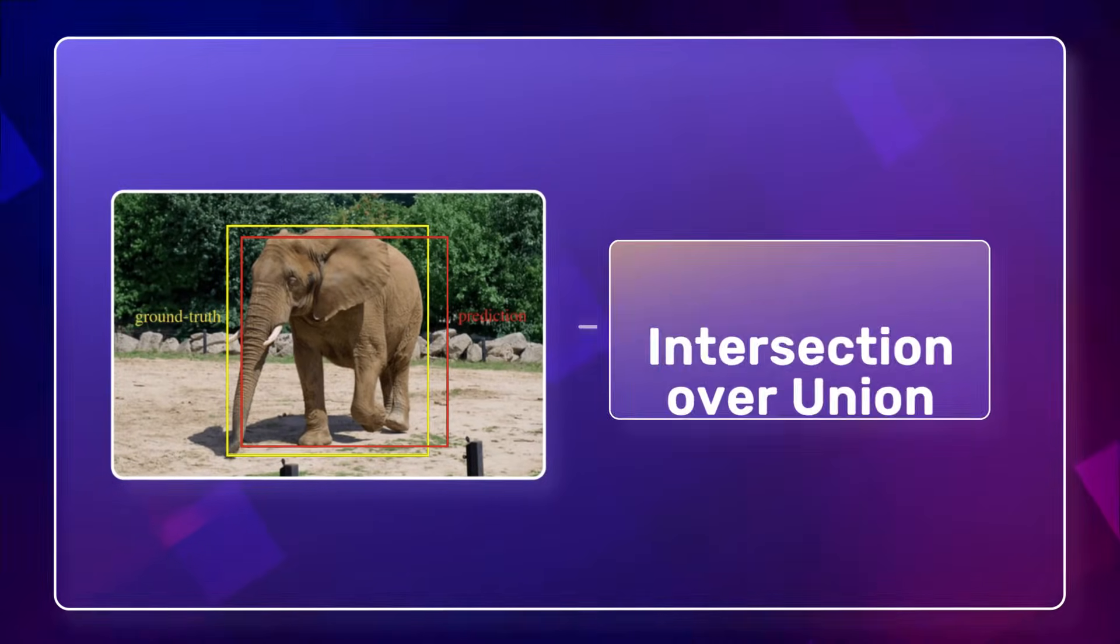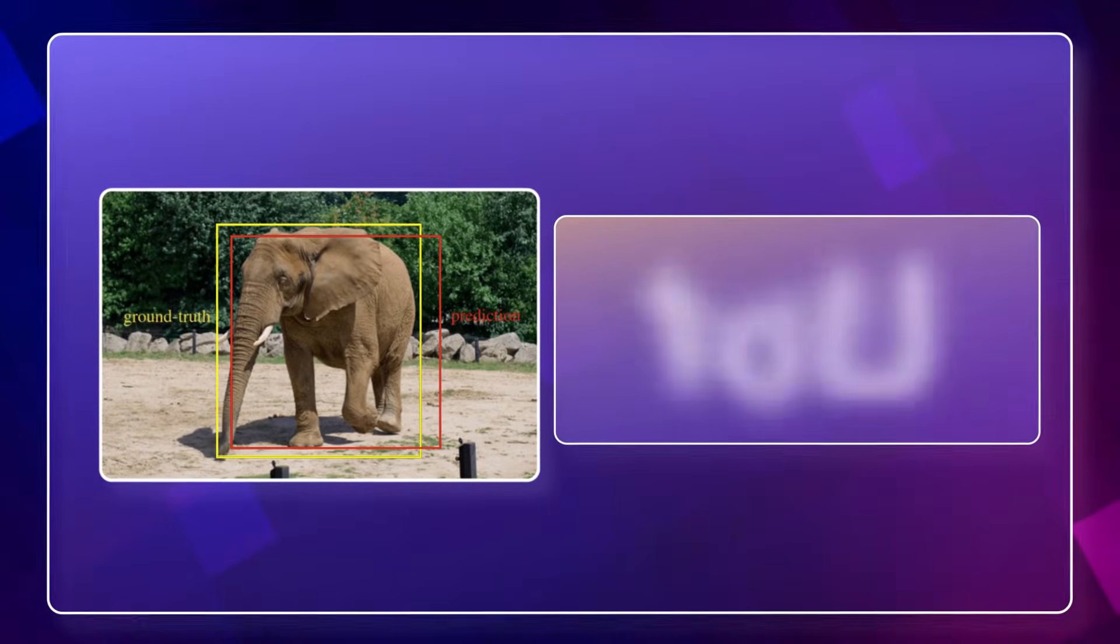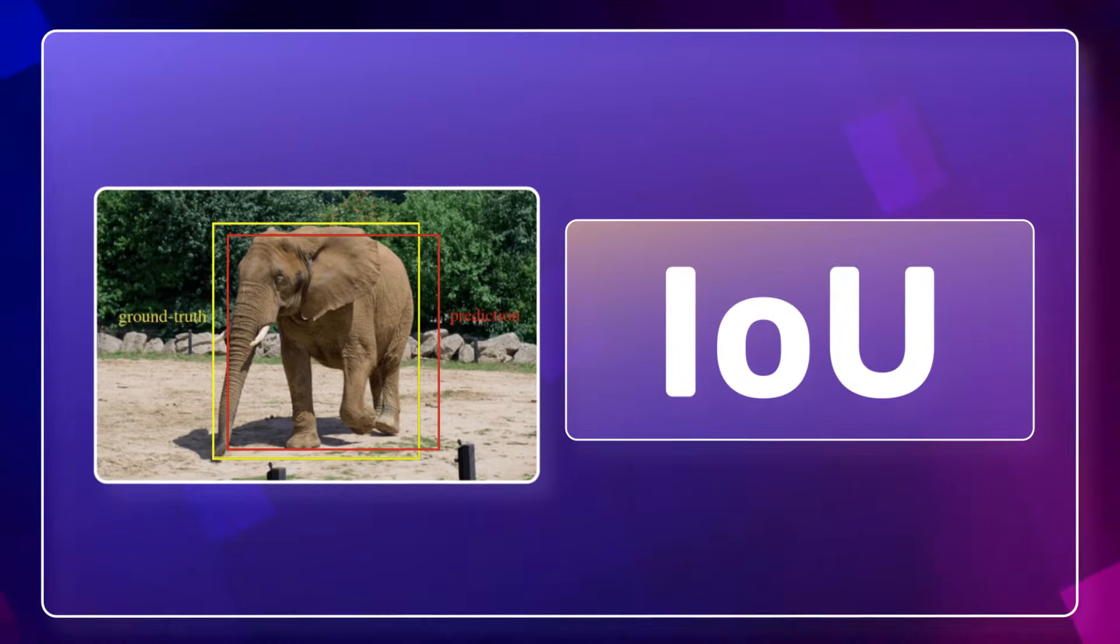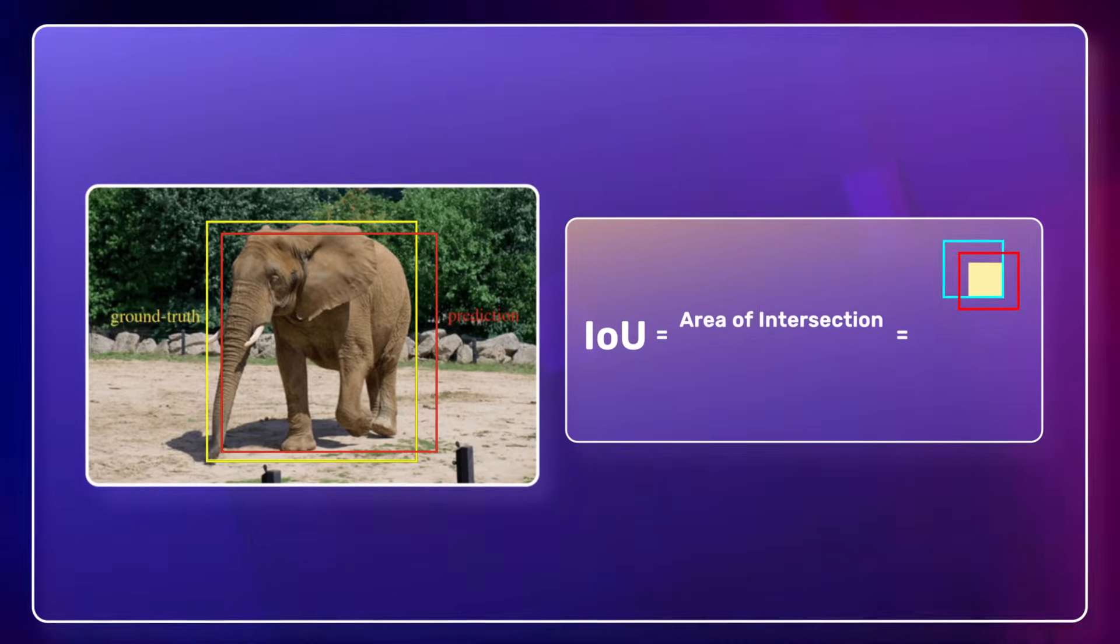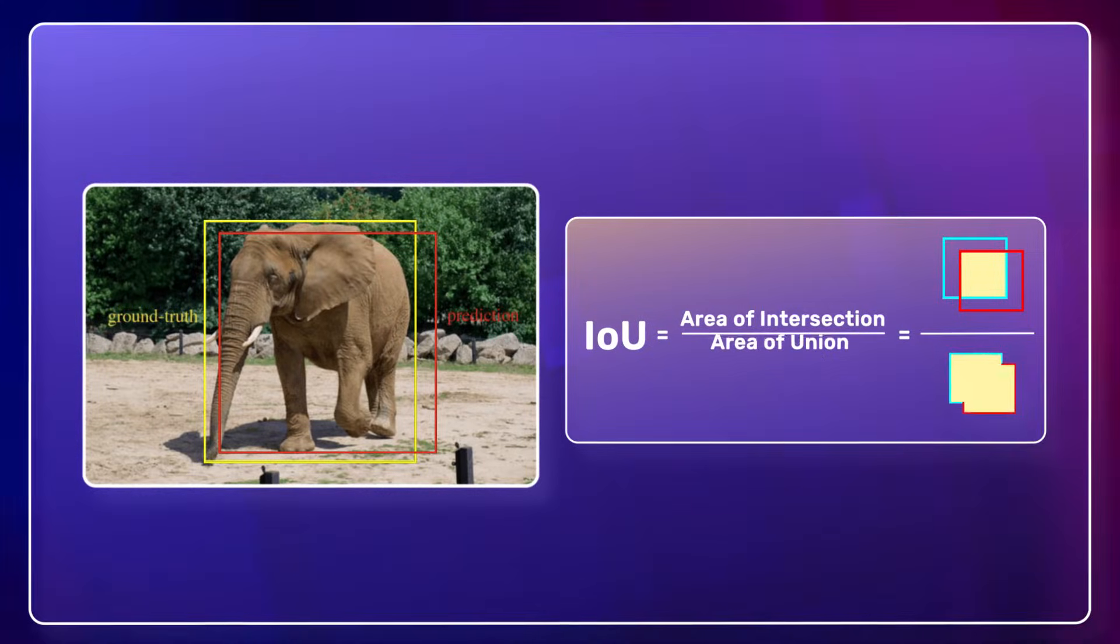That's where intersection over union, or IoU, comes into picture. It can be mathematically expressed as area of intersection over area of union.